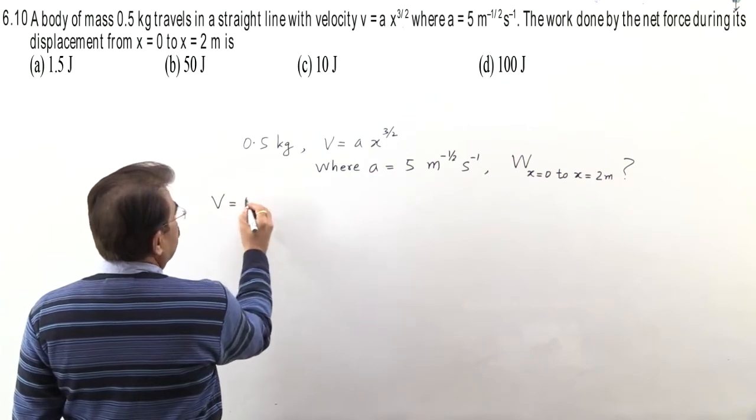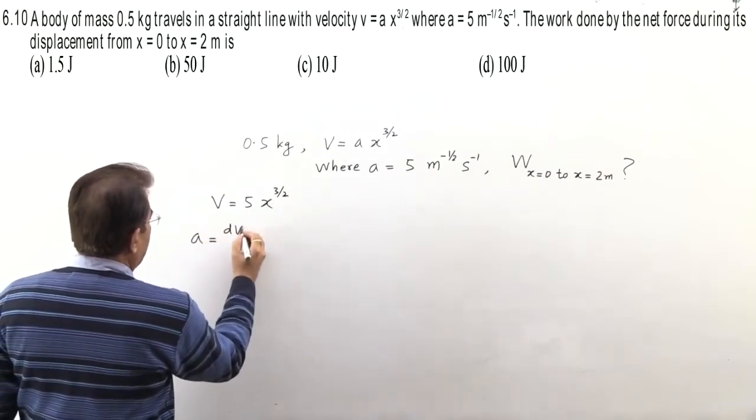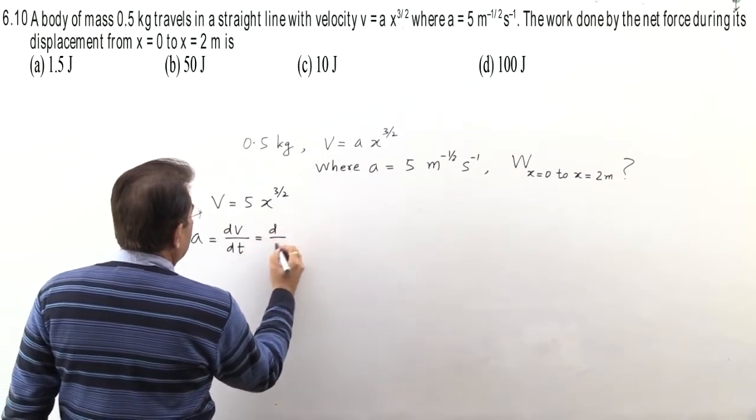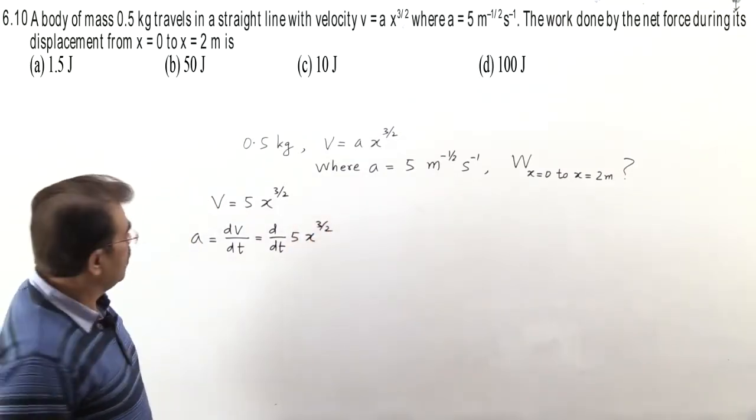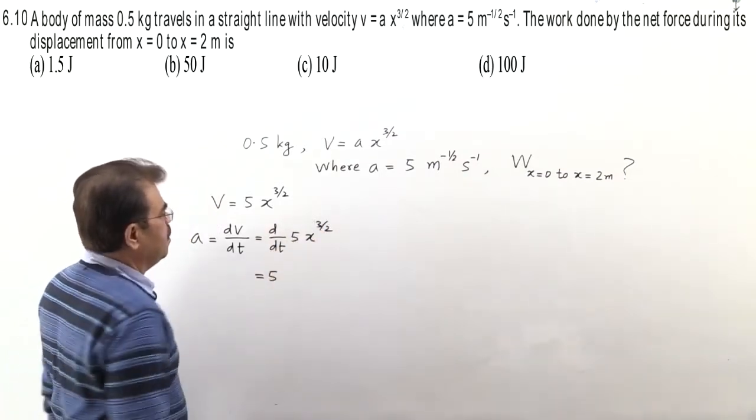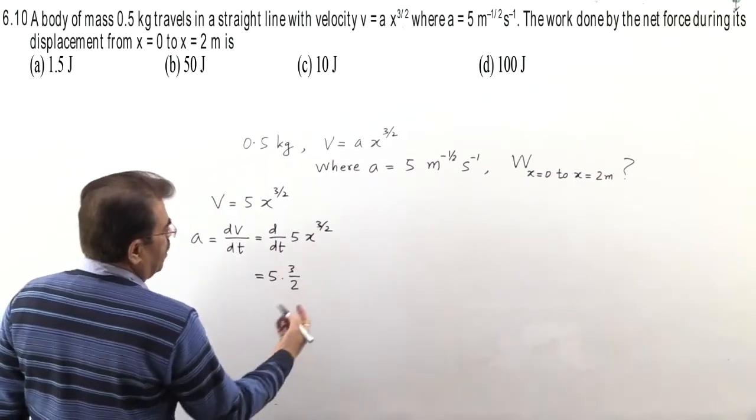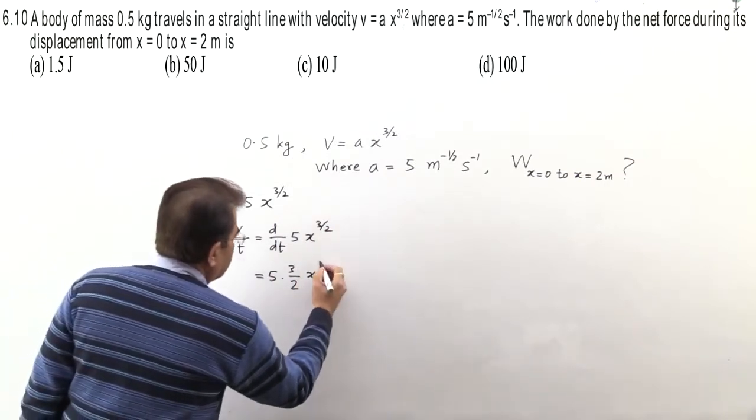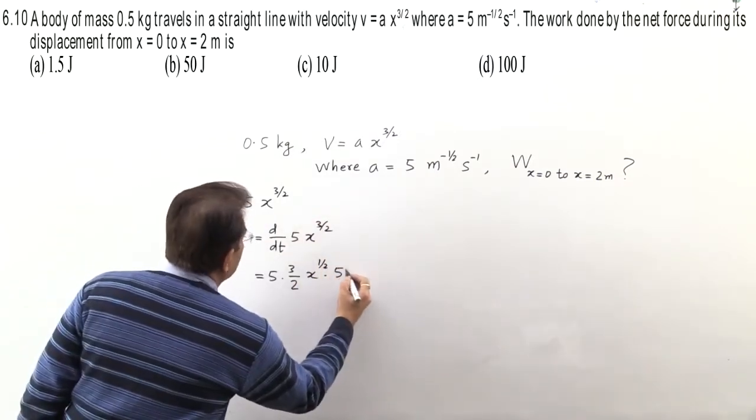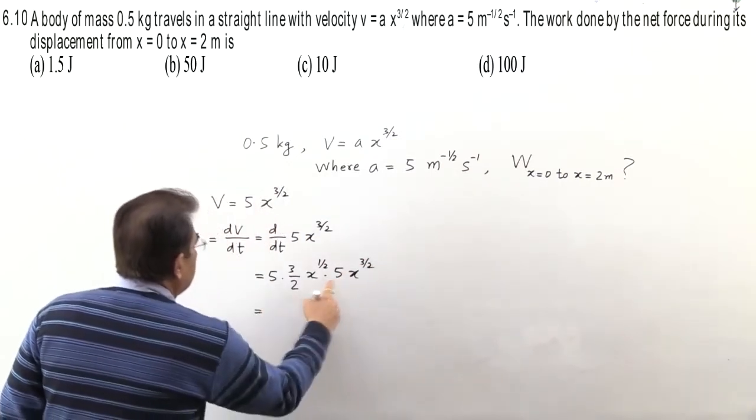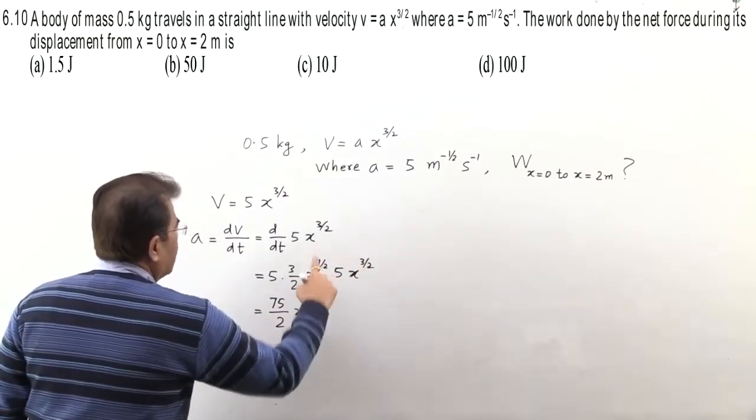First velocity is equal to 5 x raised to the power 3/2, and now acceleration by definition is dv by dt. So velocity ko with respect to time differentiate ker denge. 5 x raised to the power 3/2, this 5 is constant, it will come out. We need to apply chain rule. 3/2 times x to the power n minus 1, that is x raised to the power half, and then dx by dt, which is velocity we can substitute.